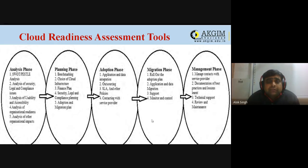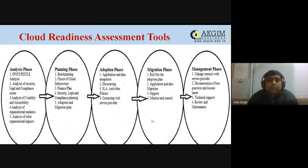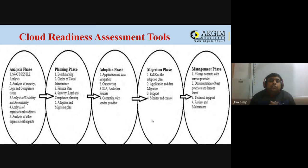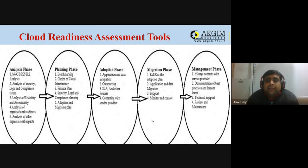Next is the Service Level Agreement (SLA) — an agreement between the cloud service provider and the client where all terms and conditions are stated to protect the rights of both parties. Next is contracting with the service provider — deciding what type of contract to sign, such as one year, three years, or five years with your cloud vendor. This completes the adoption phase.